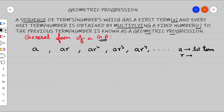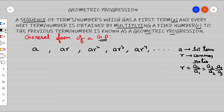And 'r' represents the common ratio. The common ratio is always the second term divided by the first term, or the third term divided by the second term, or the fourth term divided by the third term. In general, it is a(k+1) divided by a(k) — that is, the next term divided by the previous term.